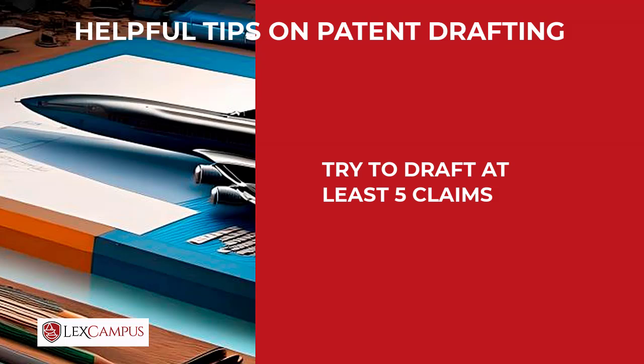Invention as claimed in claim one, wherein — it can be a narrowing down claim, a qualifying claim, or a characterizing claim. Independent claims can be something that is based on the main claim. So ideally, you will have at least five claims.